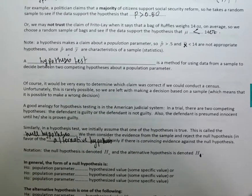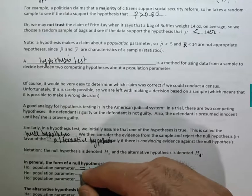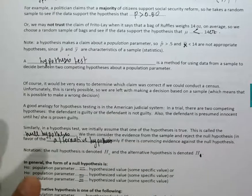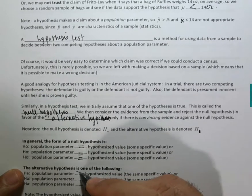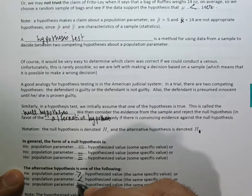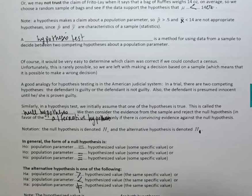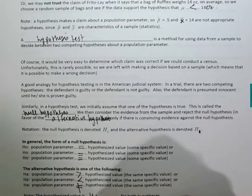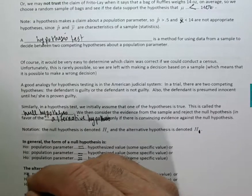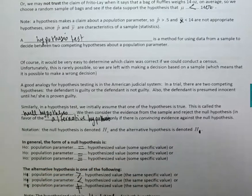Your null hypothesis must always contain an equal sign — that's how you state it. For the alternative hypothesis, the sign can be one of the following: greater than, less than, or not equal to. So the null has an equal sign, and the alternative has one of those three. Some books use Hₐ for the alternative; your book uses H₁ — it's the same thing.